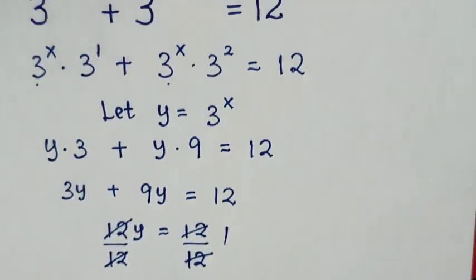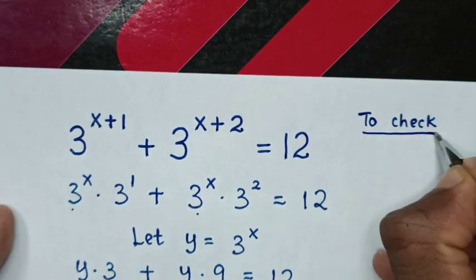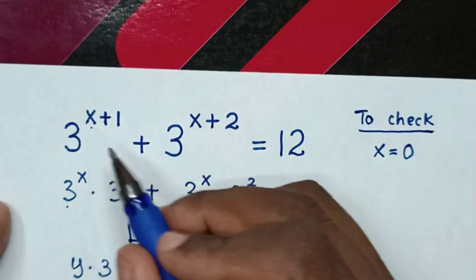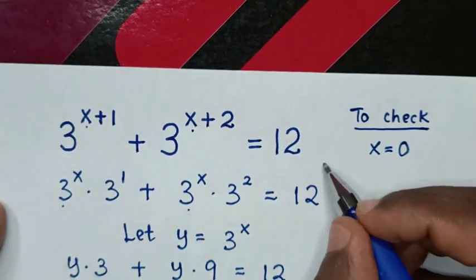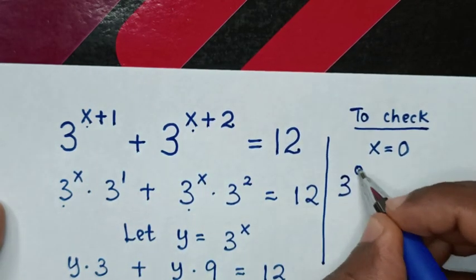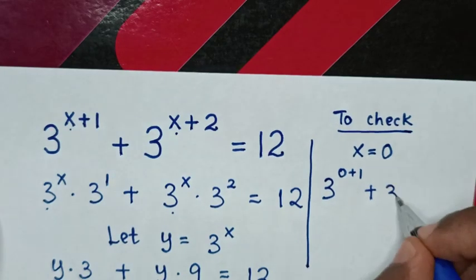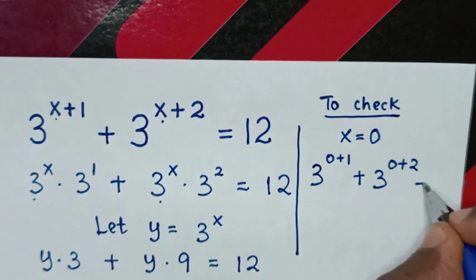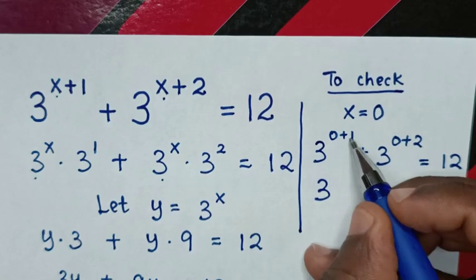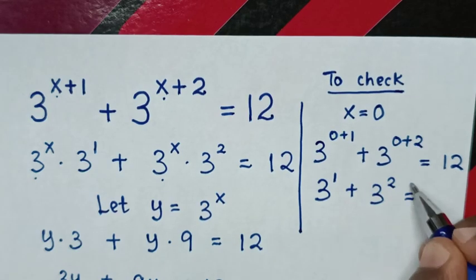Now to check if the value of x is correct: we substitute x equal to 0 into the original equation. It will be 3^(0+1) plus 3^(0+2). Is it equal to 12? In the next step, that becomes 3^1 plus 3^2. Is it equal to 12?